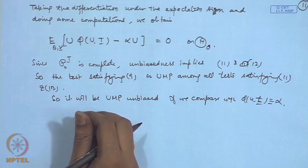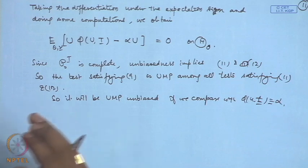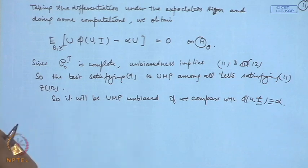A part which I have not covered here is the measurability of these functions. We should actually also show that phi 1, phi 2, phi 3 and phi 4 are all jointly measurable functions. These are all functions of u and t. So, the joint measurability of this is also required. However, this proof I am skipping here.